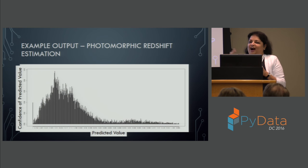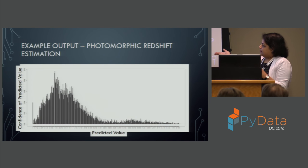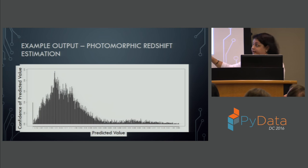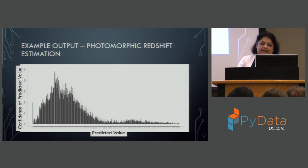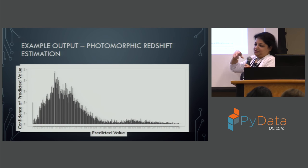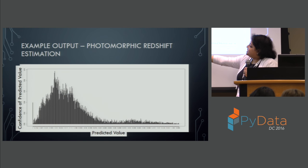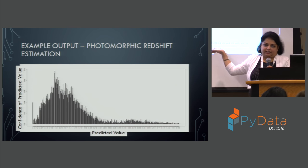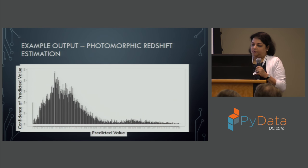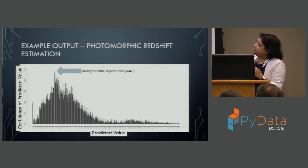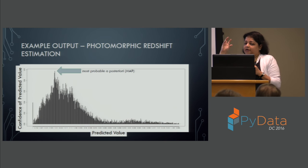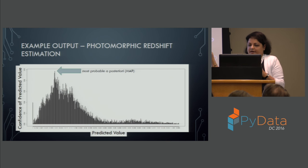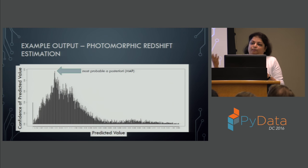Let's move on to how we actually run Bayesian network analysis in R and Python. In this example, the x-axis corresponds to predicted values and the y-axis shows the confidence of the predicted value. After running Bayesian network modeling, you can see the confidence associated with different predicted values. As a simple application, you'd go for the one with maximum probability — called the most probable posterior or MAP value — but you could also average the highest values or take a subset of the most likely ones.